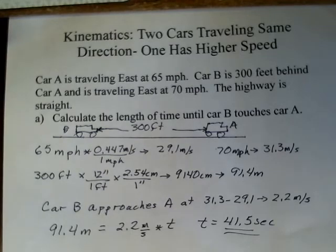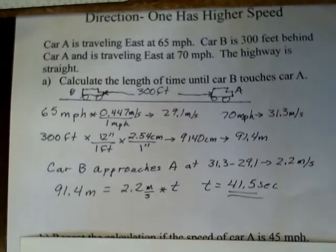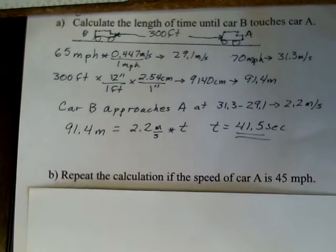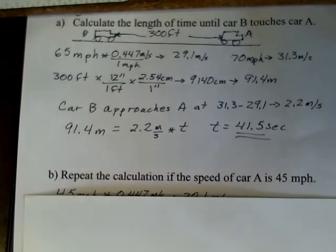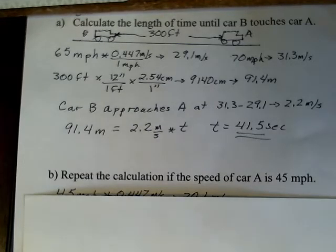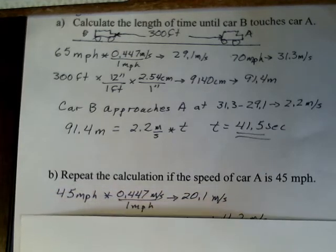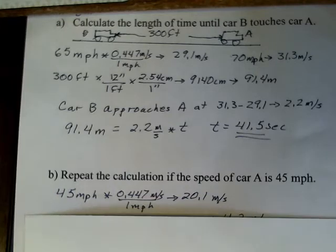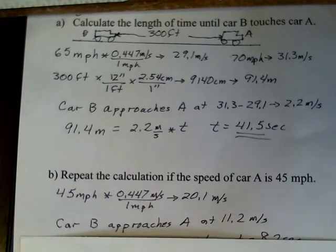Now let's look at a different question. Suppose car A is only traveling at 45 miles per hour — a much slower speed — with the same speed for car B and the same separation between the two vehicles. First, I'll change 45 miles per hour into meters per second: that becomes 20.1 meters per second. Now car B is approaching car A at 11.2 meters per second.